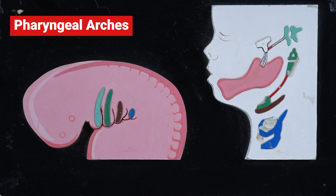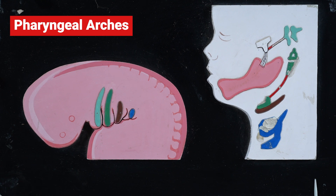In one model, you can be asked about all the derivatives of pharyngeal arches — the cartilaginous derivative, the muscular derivative, the arterial derivative, and the neural derivative. This is one of the most important models that you should never skip for your gross anatomy practical exam.